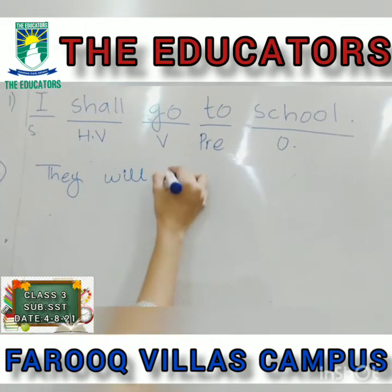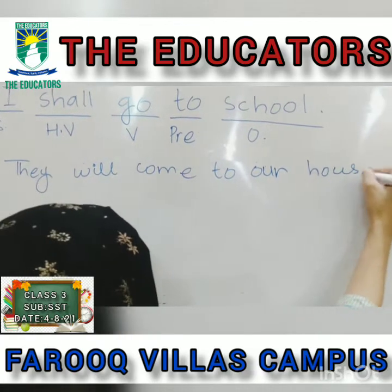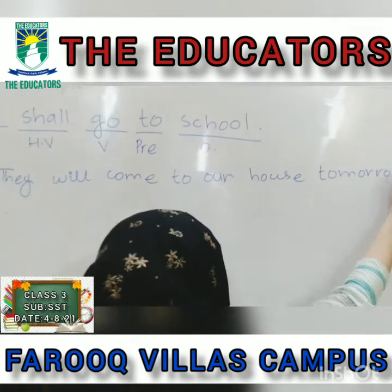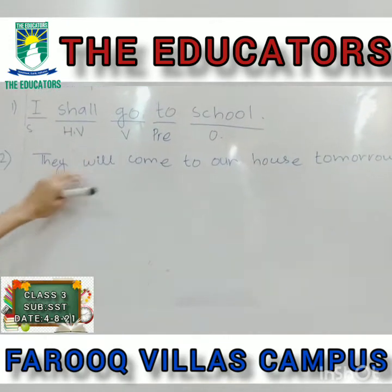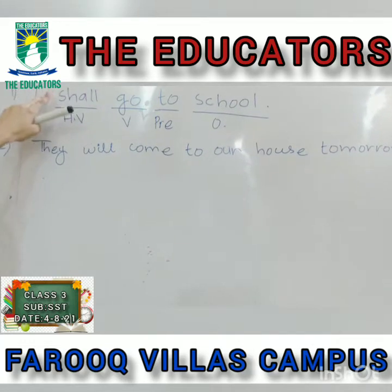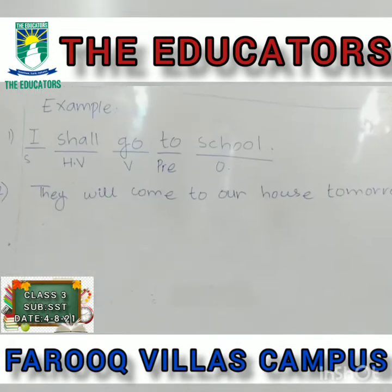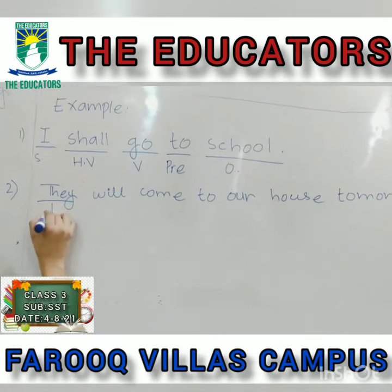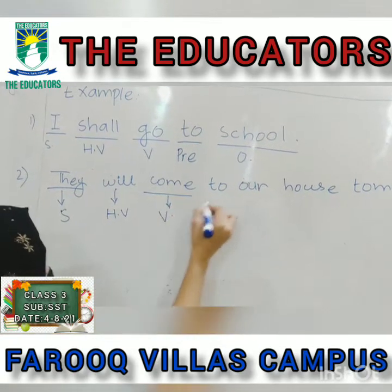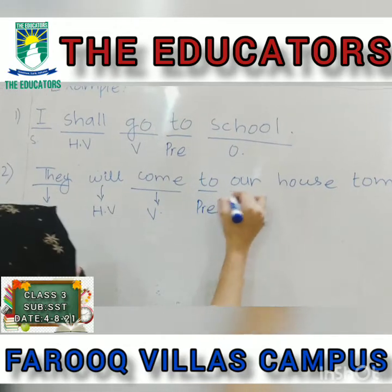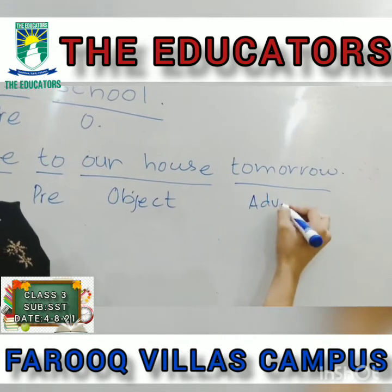Another example: 'They will come to our house tomorrow.' In this sentence we use the first form of the verb with the helping word 'will'. 'They' is the second person, so we use 'will'. 'They' is the subject, 'will' is the helping verb, 'come' is the verb, 'to' is a preposition, 'our house' is the object, and 'tomorrow' is an adverb of time.